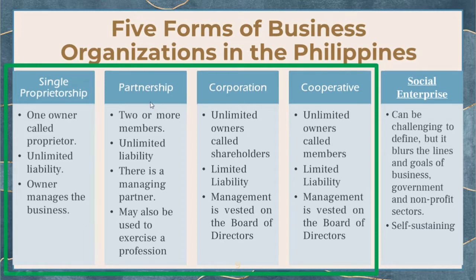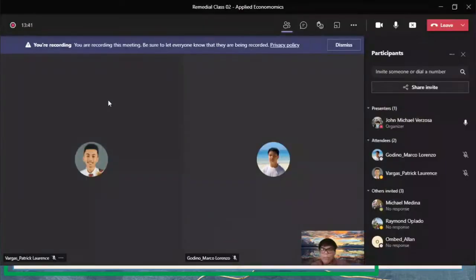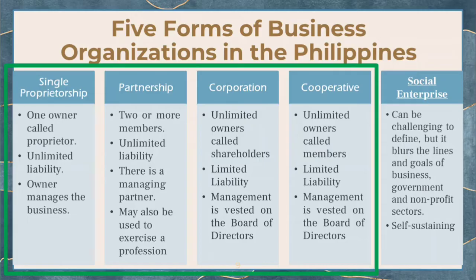For single proprietorship: there is one owner called the proprietor, there is unlimited liability, and the owner manages the business. For partnership: there are two or more members, there is unlimited liability, there is a managing partner, and it may also be used to exercise a profession — such as accountancy, engineering, law, and medicine, among others.